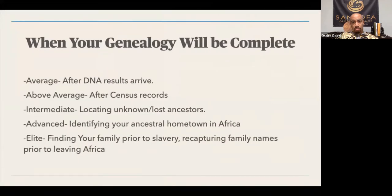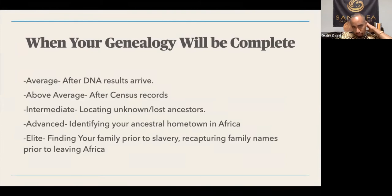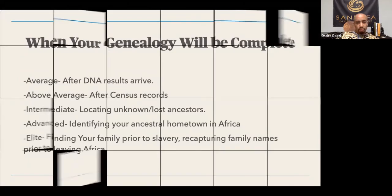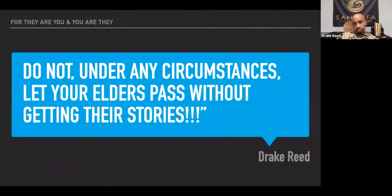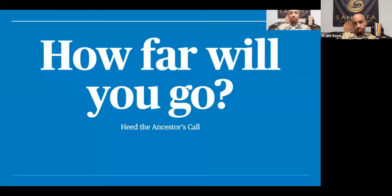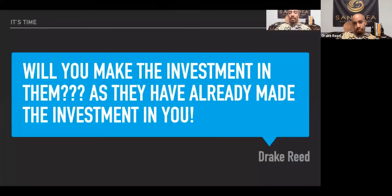The average person gets a DNA test, finds out they're from a particular country in Africa, and stops. The next level: people who also find census records, then stop. The intermediate level is when things get interesting — you start locating unknown ancestors. At the advanced level, you identify your ancestral hometown in Africa, which puts you back to where your ancestors were before the slave trade. The elite level is finding your family prior to slavery and recapturing family names prior to leaving Africa. Do not, under any circumstances, let your elders pass without getting their stories. Now that you know a little about genealogy, how far would you go to heed your ancestors' call? Will you make the investment in them as they have already made the investment in you?